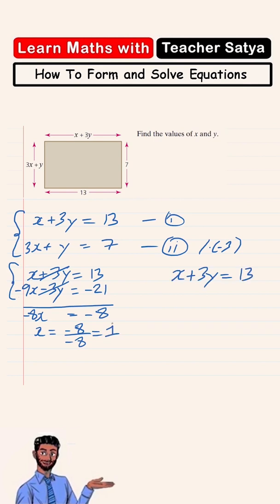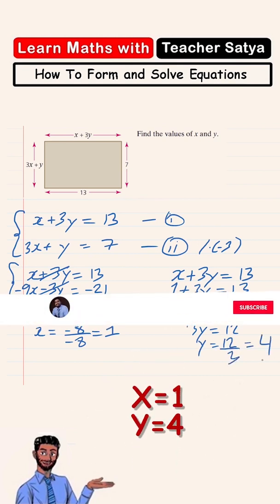The value of x is equal to 1. So I would have 1 plus 3y equals 13. So 3y equals 13 minus 1. 3y equals 12. Therefore y equals 12 over 3, which is 4.